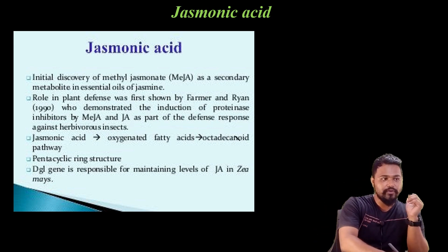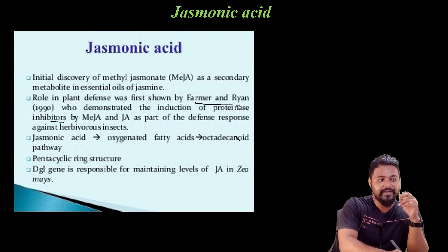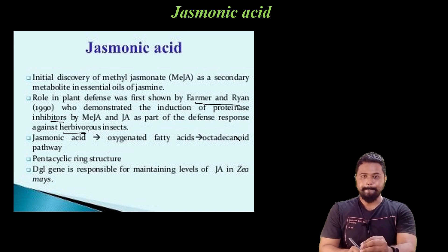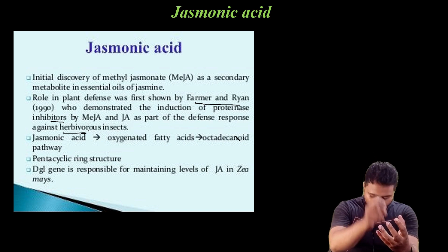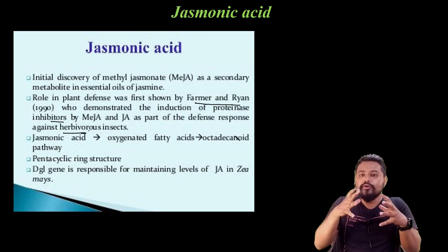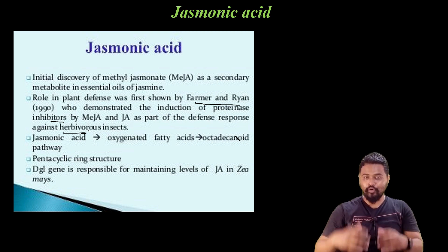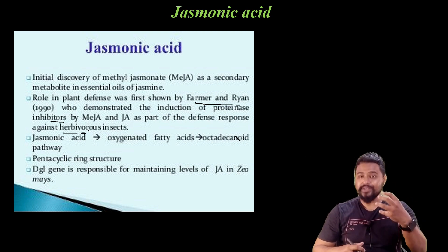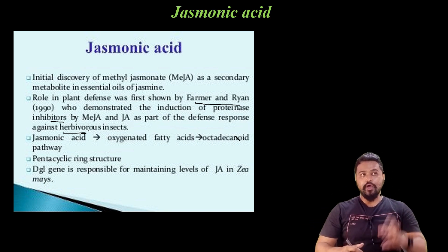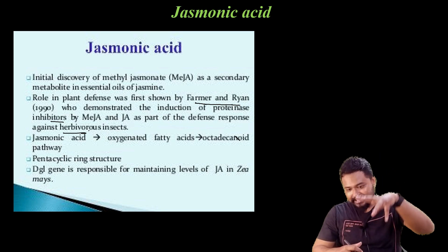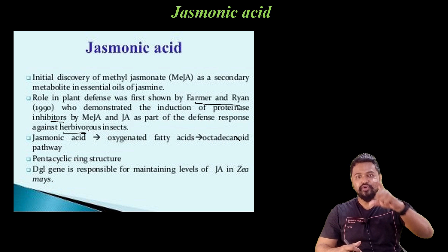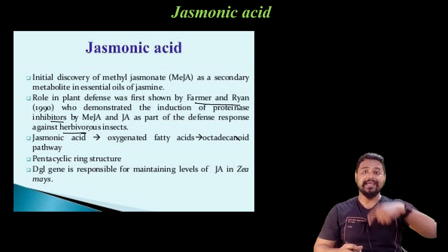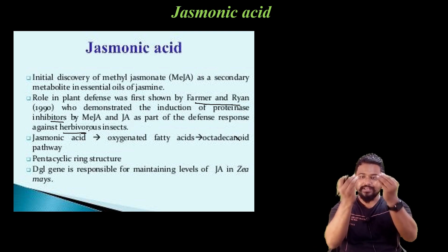The last hormone to discover is jasmonic acid, discovered by Farmer and Ryan. Its first role is the induction of protein as part of a defense response against herbivory insects. This hormone is released under stress — jasmonic acid is released and helps with growth and development.